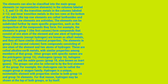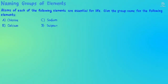The elements in group 2 (the second column) form compounds consisting of one atom of the element and two atoms of hydrogen; these are called alkaline earth metals, with similar properties among members of that group. Other groups with specific names are the pnictogens (group 15), chalcogens (group 16), halogens (group 17), and noble gases (group 18), also known as inert gases. Groups can also be referred to by the first element of the group — for example, the chalcogens can be called the oxygen group or oxygen family. Hydrogen is a unique nonmetallic element with properties similar to both group 1A and group 7A elements, and may be shown at the top of both groups or by itself.